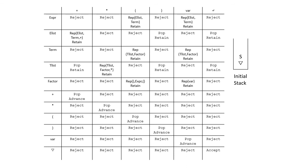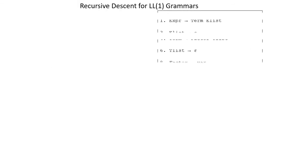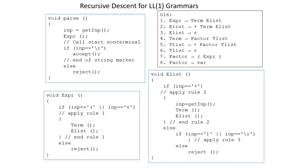Since grammar 6 is an LL1 grammar with disjoint selection sets for the same non-terminals, we can construct an extended pushdown machine for it. We initialize our stack with the starting non-terminal — which should not be S. Since our starting non-terminal is expression, we initialize our stack with the bottom marker and expression. Here is the recursive descent parser for grammar 6, and we need to create methods for all non-terminals.